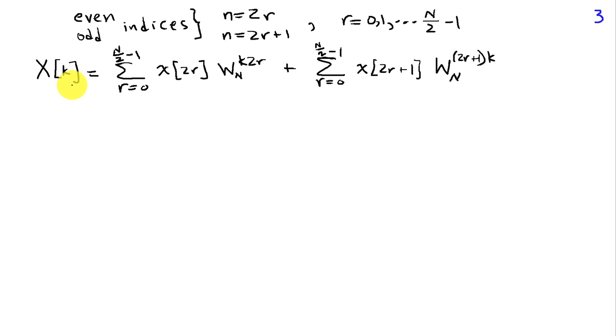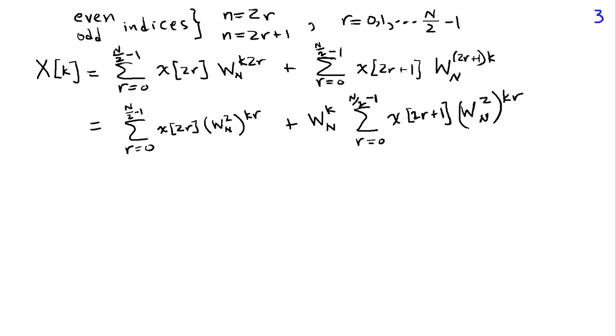Thus, x of k, my DFT coefficient, can be expressed as a sum over r, where I have, in place of n, for the even indices, I have x[2r]. And then I'm going to replace n with 2r. And then for the odd indices, I have x[2r+1], and then W_N^((2r+1)k). What we're going to do is factor out the term of W here that doesn't depend on r. So I have W_N^(1*k). So we'll pull that out front of the sum. And then we'll also recognize that W_N^(k*2*r) is just W_N^2 raised to the kr power.